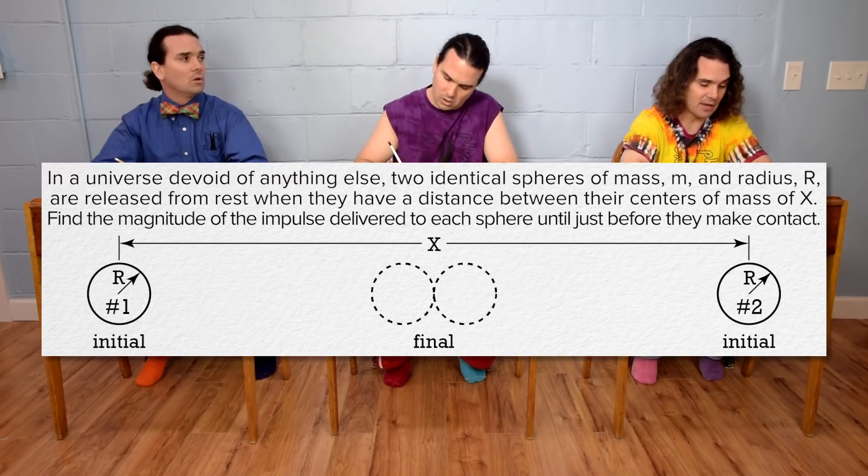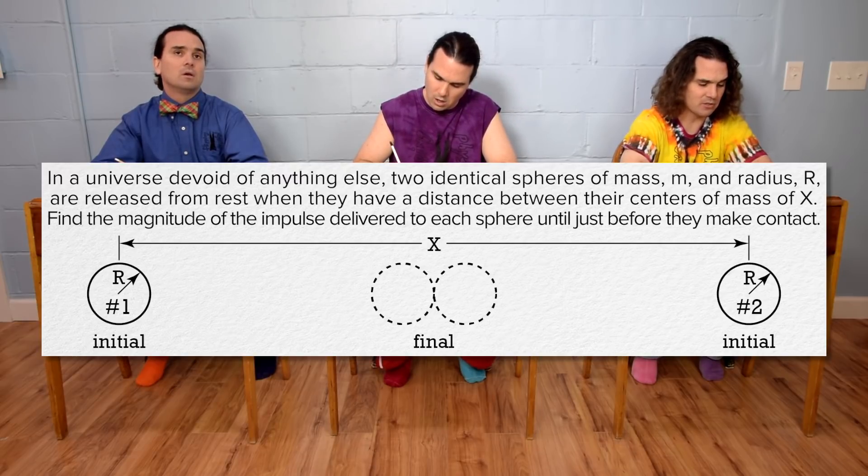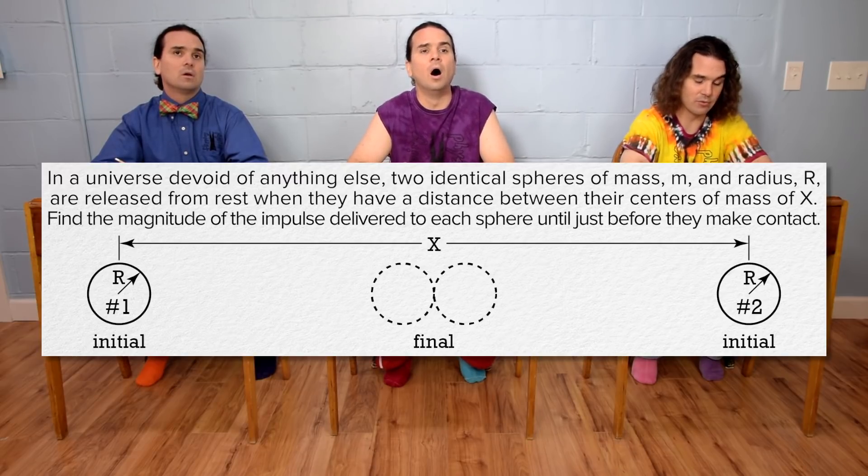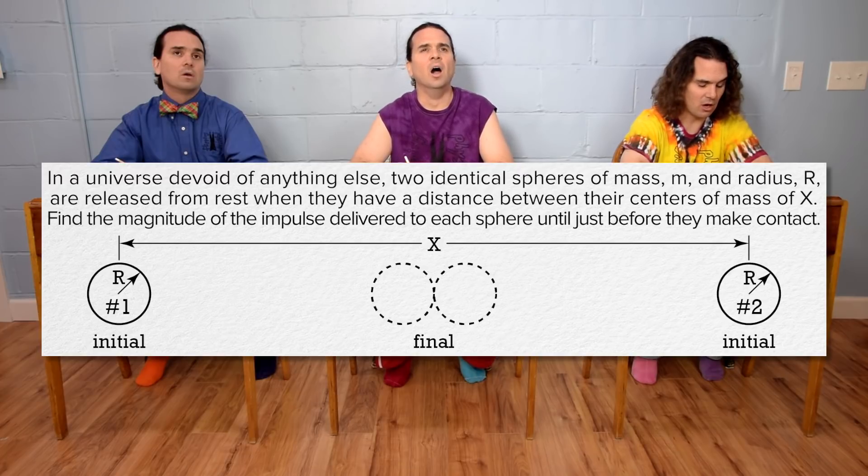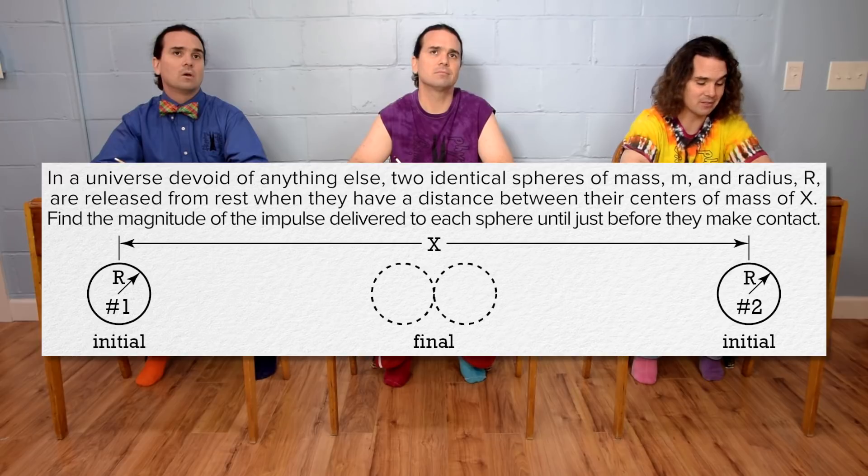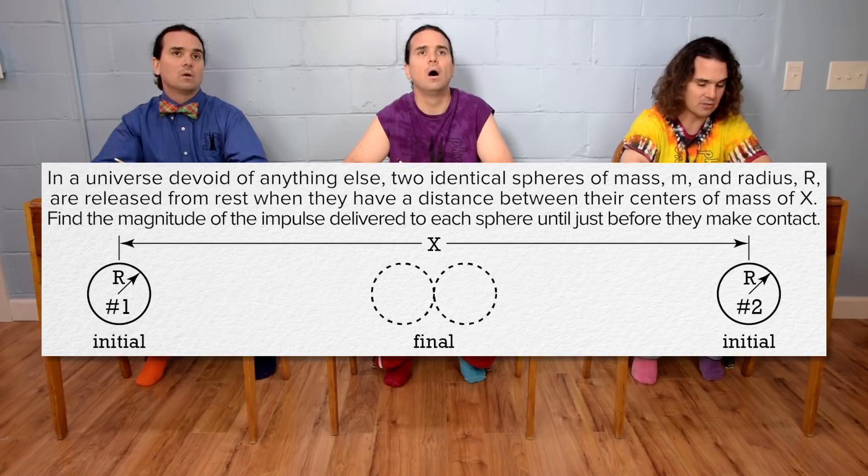In a universe devoid of anything else, two identical spheres of mass lowercase m and radius uppercase R are released from rest when they have a distance between their centers of mass of uppercase X. Find the magnitude of the impulse delivered to each sphere until just before they make contact.